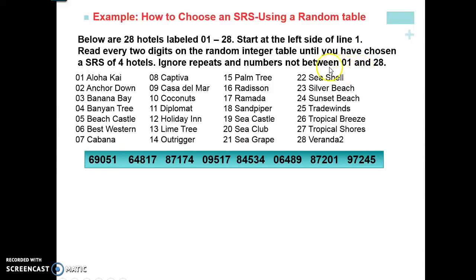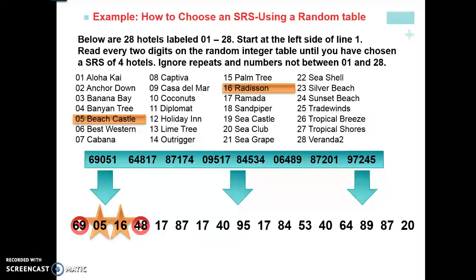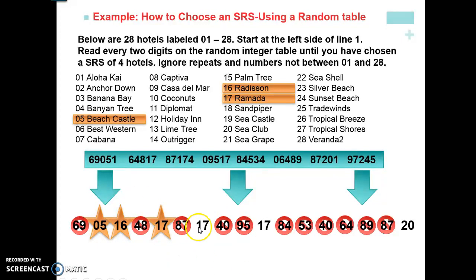We also want to ignore everything that's not between one and 28. Make sure if you handed this to your mom, dad, brother, or sister, they could read it and say, 'Oh, I can do that.' Don't assume they know anything about statistics. So here's how our sample works. We've taken this table and divided it into groups of two — I like to underline them, I think it helps. After dividing into groups of two, we can state which numbers work: 05 and 16 were chosen, 48 wasn't, 17 is — wait, 17 is not chosen because we're ignoring the repeats. These numbers are outside my range until I get to 20.